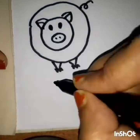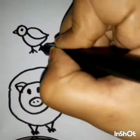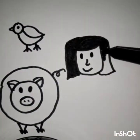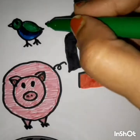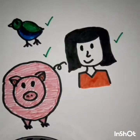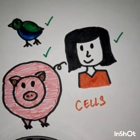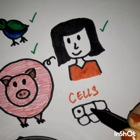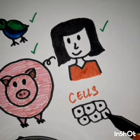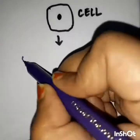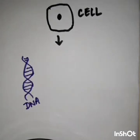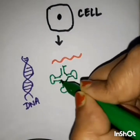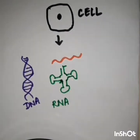All living things — whether animals, birds, human beings, and even plants or trees — are made up of single units of life known as cells. These are the fundamental units of life. Among the various things inside a cell, we have mainly DNA, RNA, and proteins.